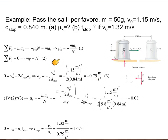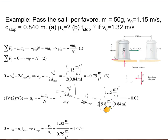Once you know the acceleration, you can solve for mu k in the first equation. Mu k equals minus m times ax divided by the normal force. The normal force is mg, so m cancels, giving mu k equals ax divided by g. Plugging in the values, mu k equals 0.08. There is no dimension — mu k, whether static or kinetic friction coefficient, is unitless. It's just a constant.